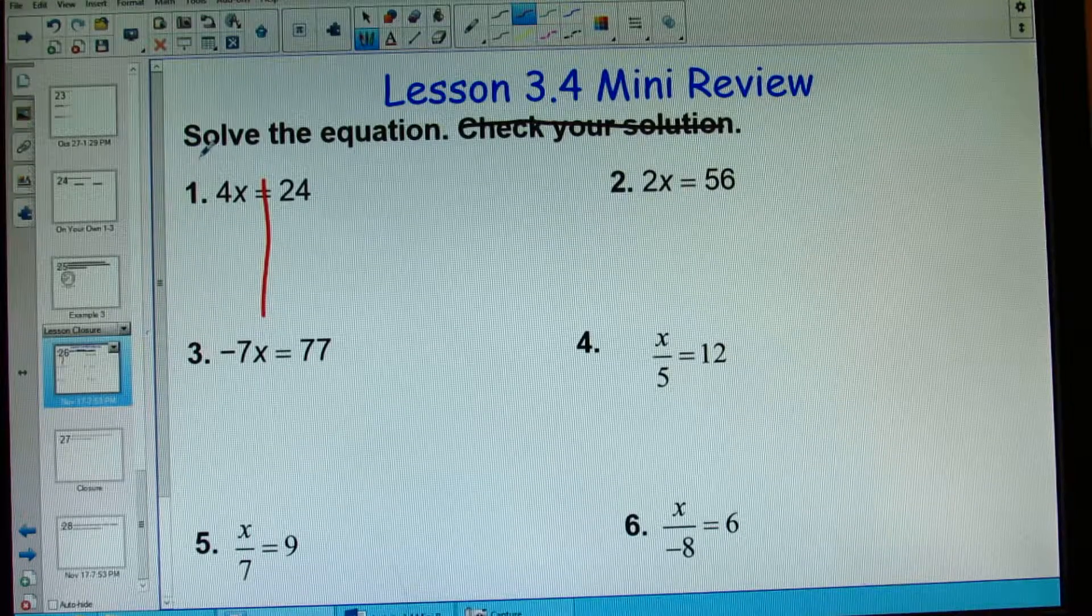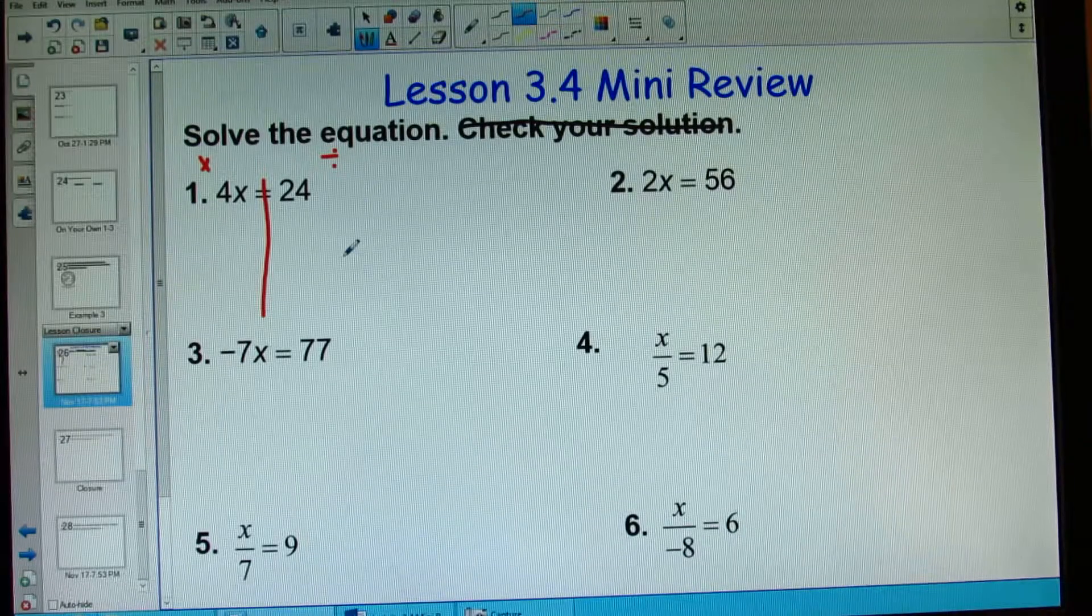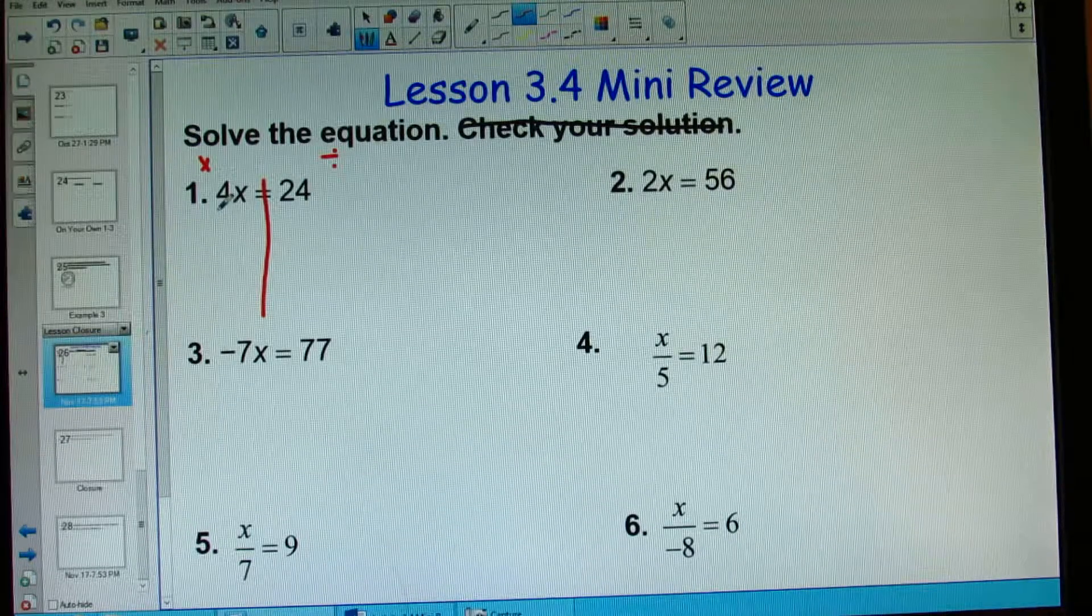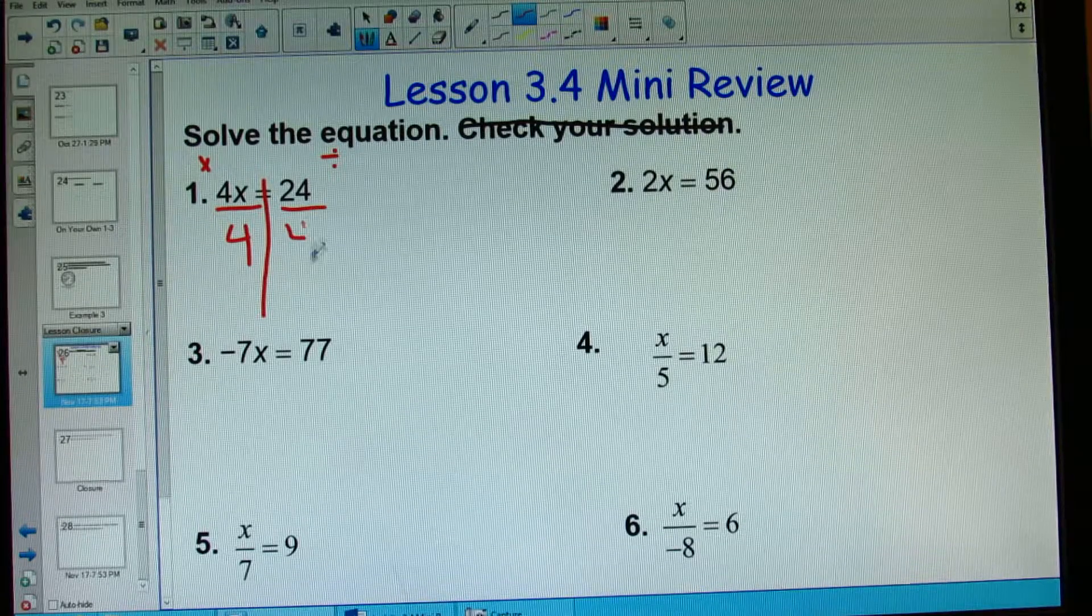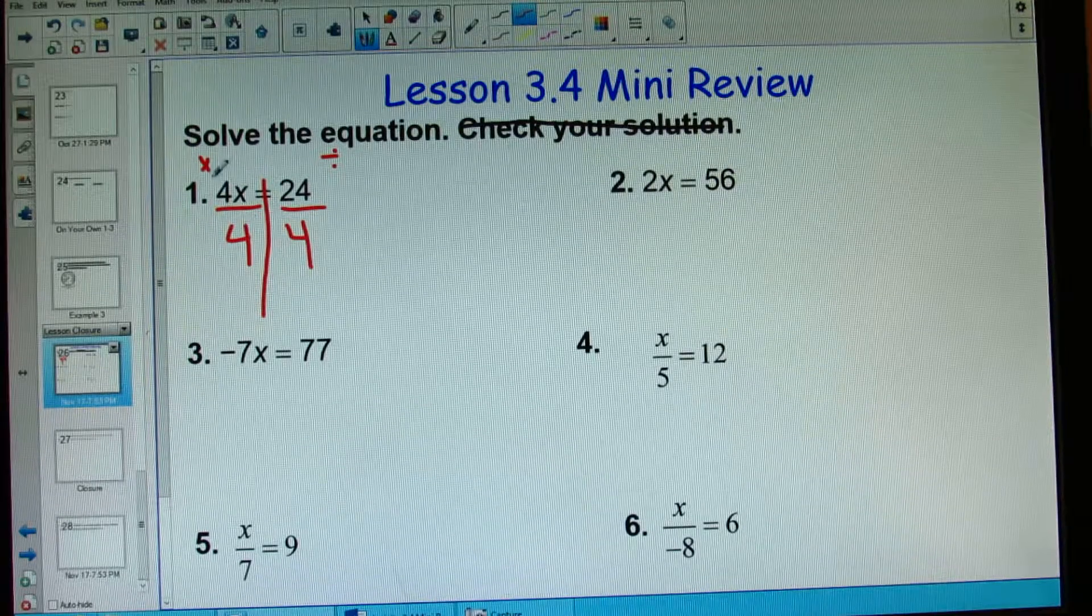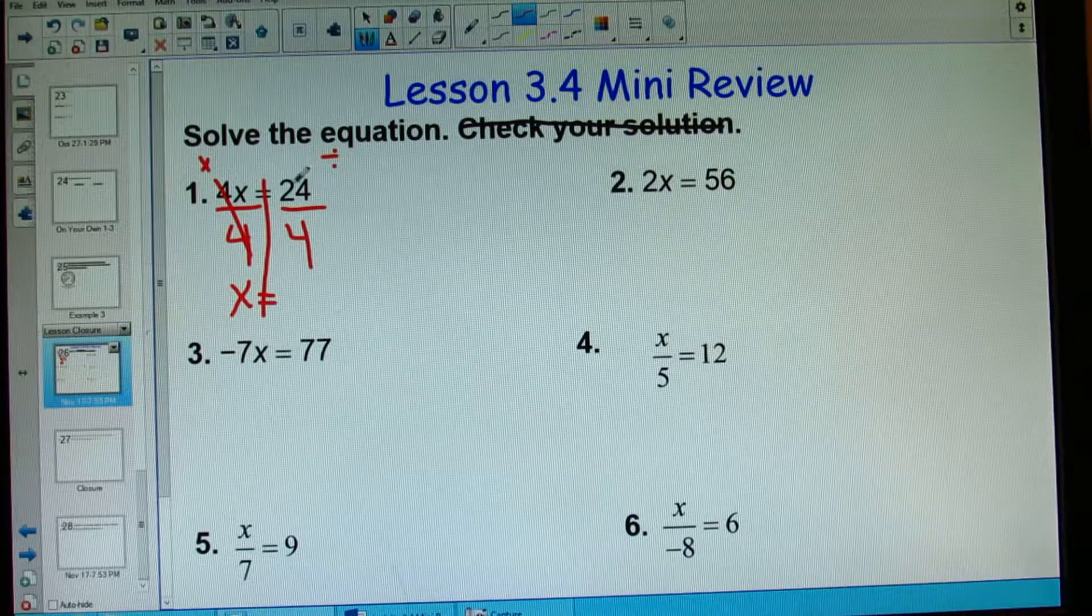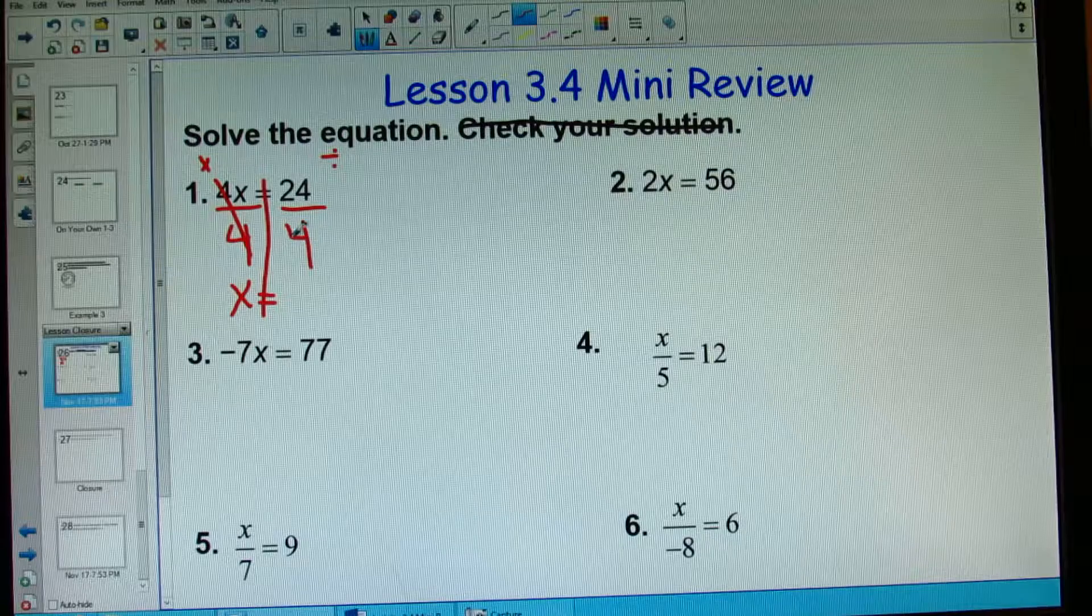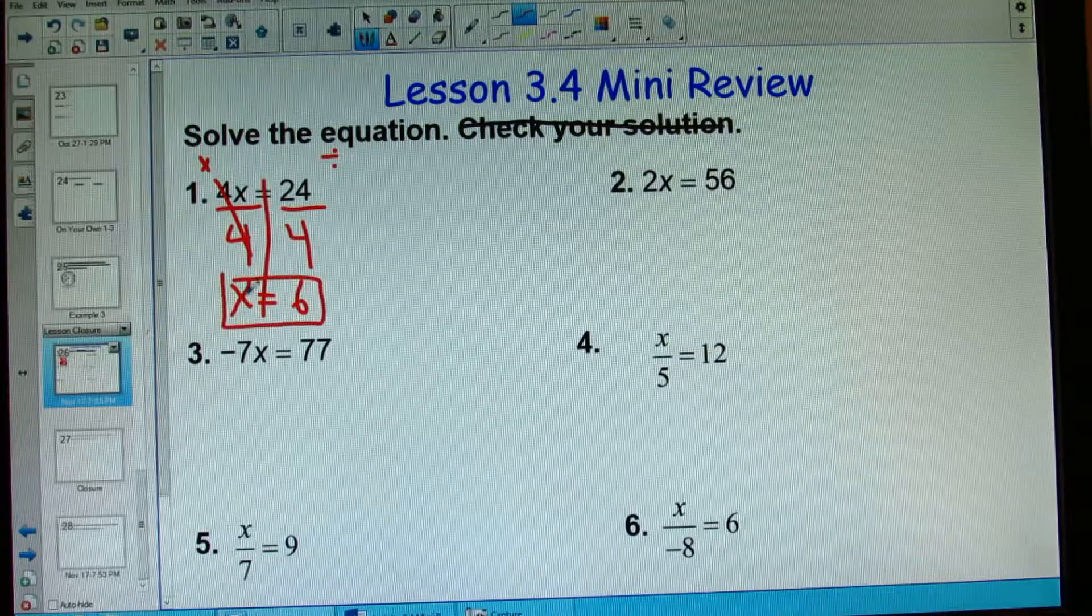So in order to get rid of multiplying, I need to do its opposite or inverse operation, which is divide. So I need to divide both sides by 4 in order to get that 4 away from it. 4 divided by 4 will cross out to 1, and then 24 divided by 4, which is 6. My answer is x equals 6.